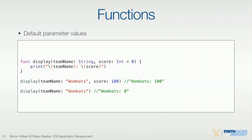You can also define functions with default parameter values. For example, you have a team name and a score, and if I don't always want to pass the score, I can say the score is an integer that defaults to zero. Now you have two choices: call the function with a score, or just use the default value and call without it. If you don't define a default, you always have to call every parameter — otherwise the compiler says the function doesn't exist.